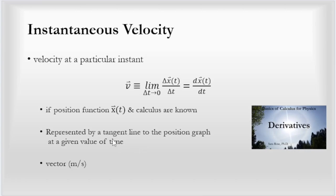Velocity is a vector, so instantaneous velocity has vector properties. It may have a negative or positive sign, and it may have x, y, and/or z components. You need to take that into account when working with it.